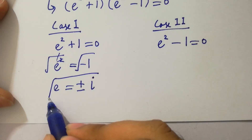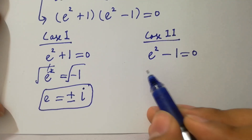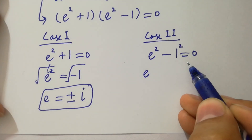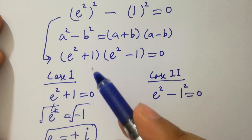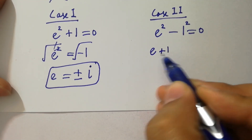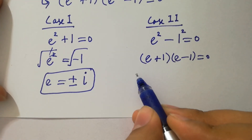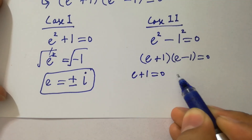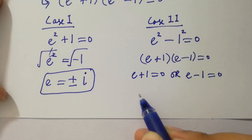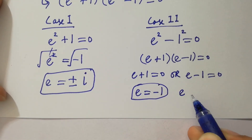So from Case 1 we have two solutions: plus i and minus i. From Case 2: e squared minus 1 squared equals 0. Applying the formula a squared minus b squared equals (a plus b)(a minus b), it becomes (e plus 1)(e minus 1) equals 0, giving e plus 1 equals 0 or e minus 1 equals 0.